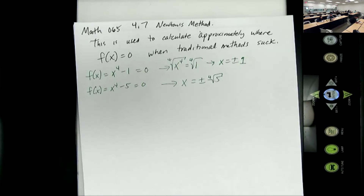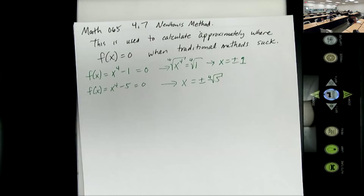I don't have a fourth-root-of-5 button on my calculator. I could take the square root twice, but we don't think of it in terms of this specific function only — this method works on any of them.